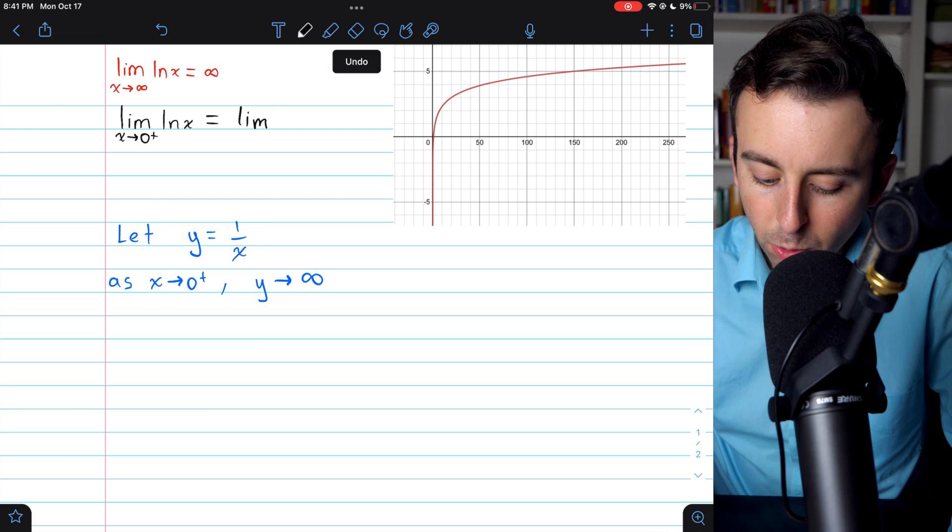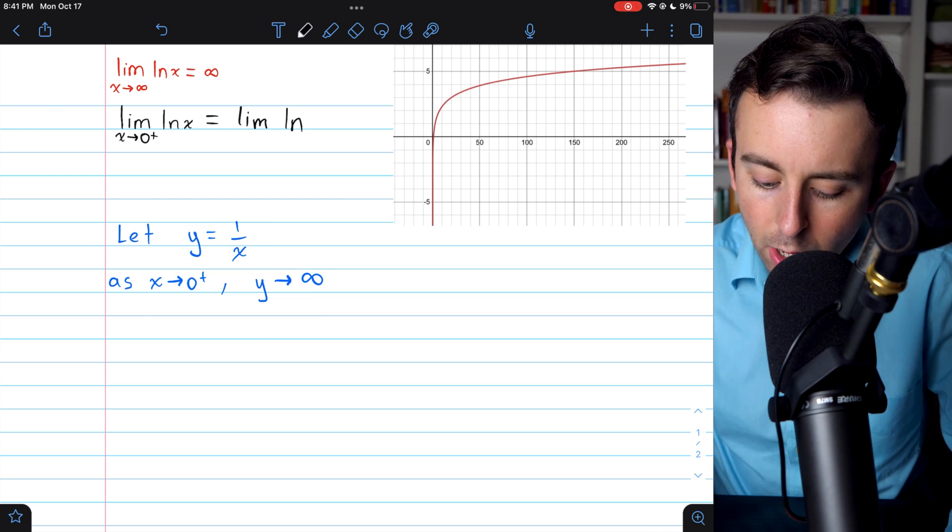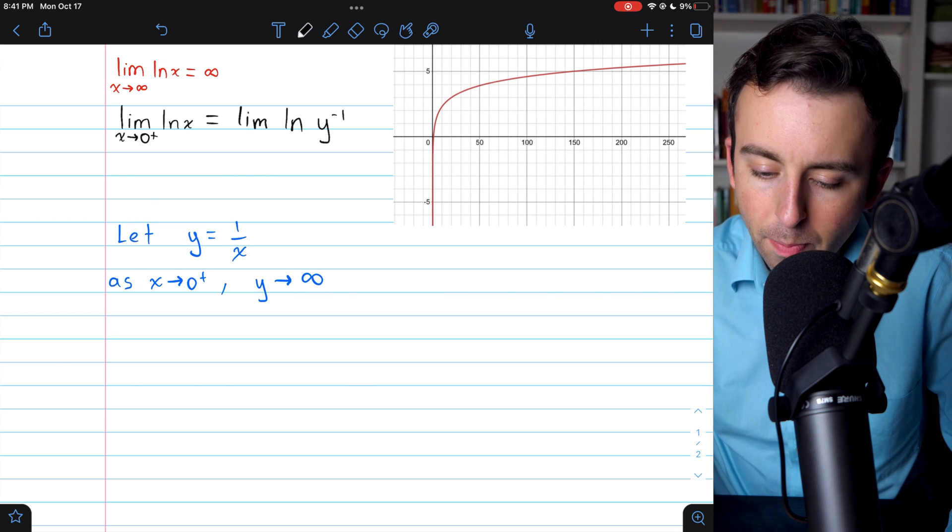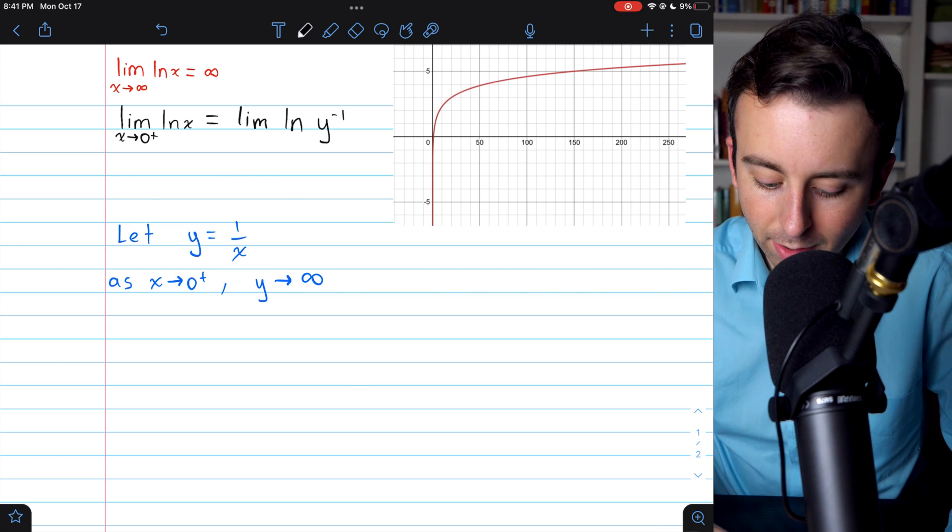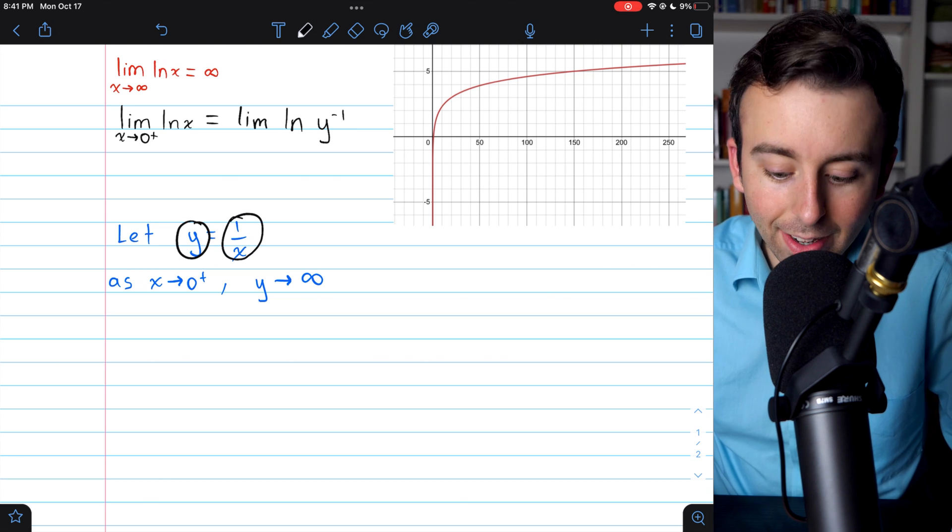So natural log of x, if we want to write it in terms of y, would be natural log of y to the power of negative 1. Because if we invert y, we would just get x.